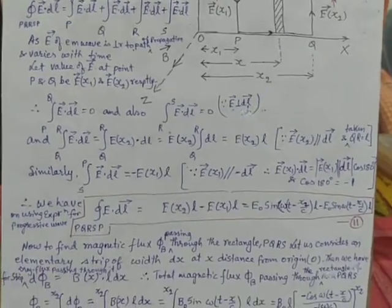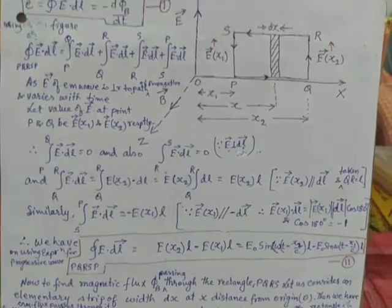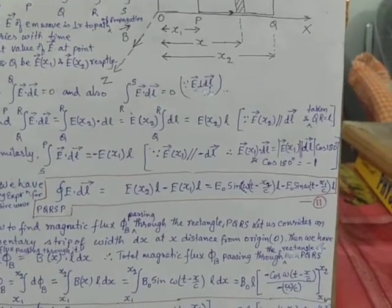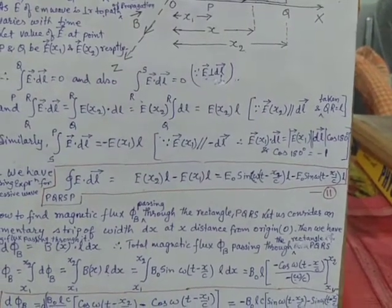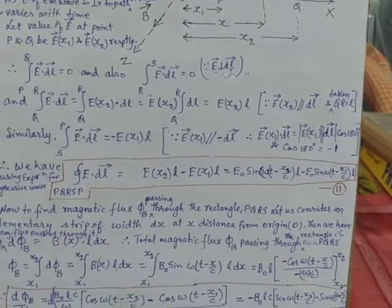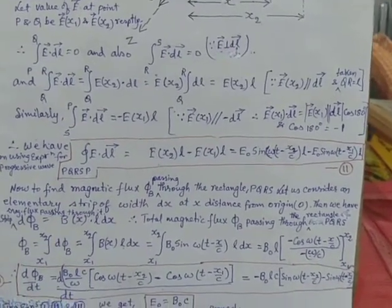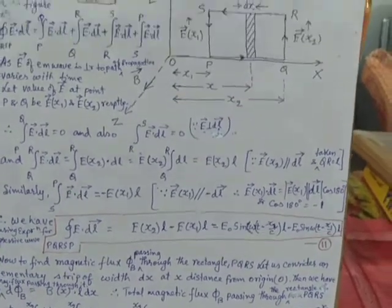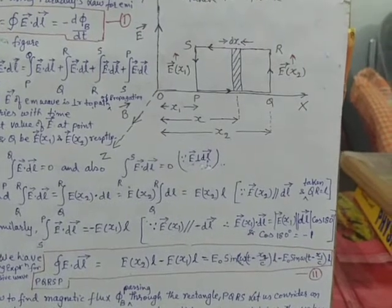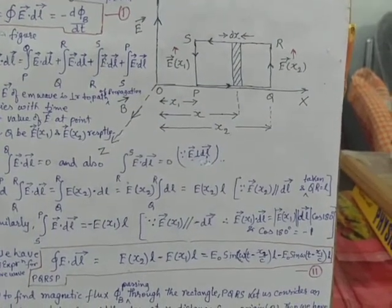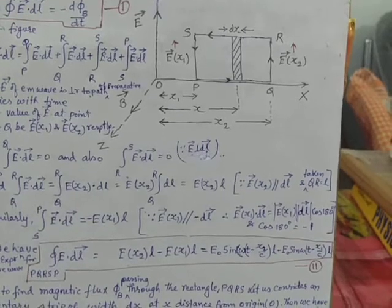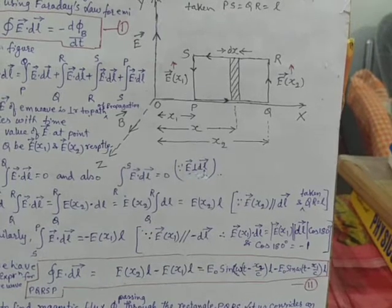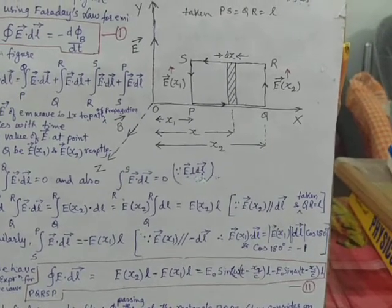The integral E dot DL integrated over the whole loop PQRS gives E_x2 times L minus E_x1 times L, where E_x1 is the electric field at point P and E_x2 is the electric field at point Q.